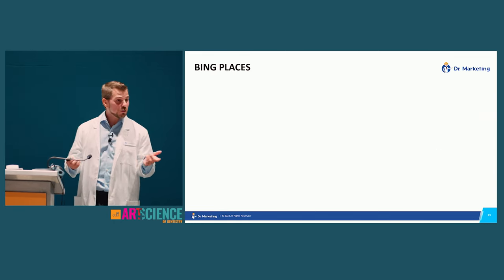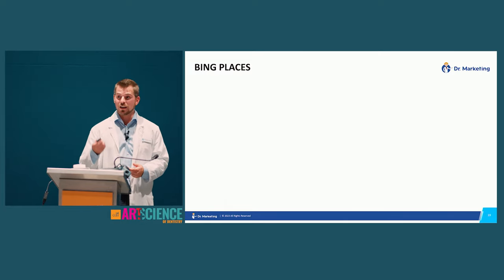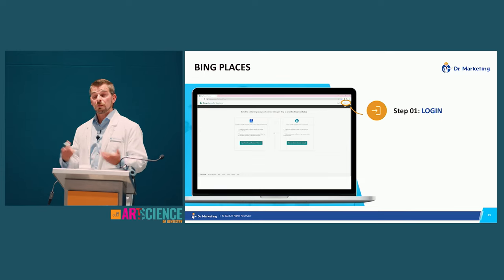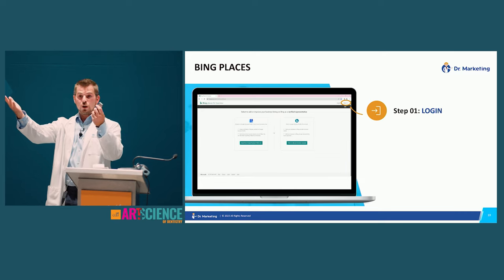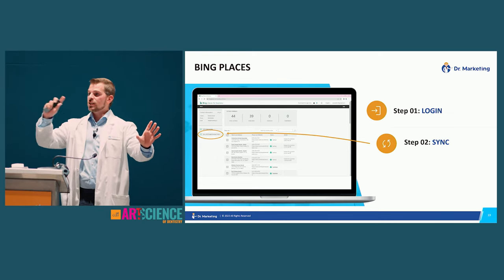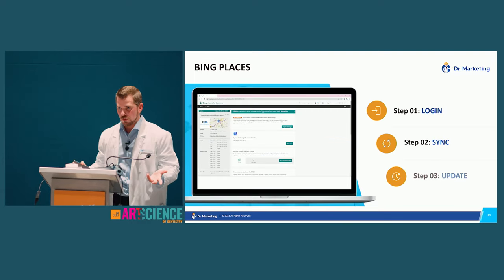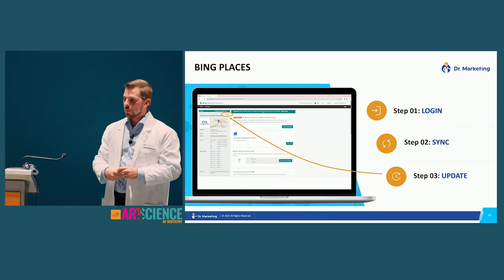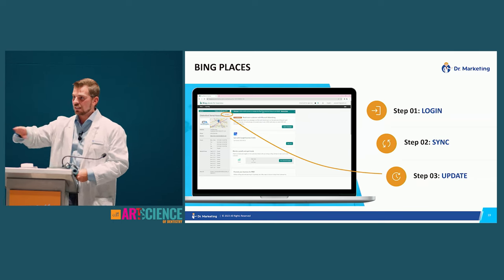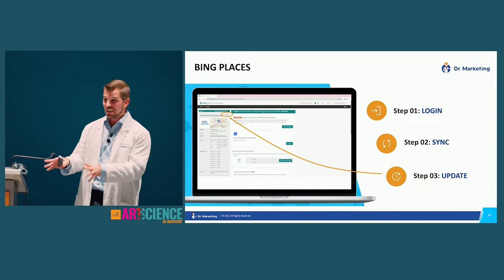After Google, set up Bing. Did you know 30% of the world still uses Bing? It's the default browser for PCs — not everyone changes their default search engine. Go to bing.com and log in — Bing and Microsoft talk to each other, so you can log in through your Google account. Then sync Google to Bing; it takes about a minute and pulls about 95% of your data. Go to your homepage, edit all information — hours, images, contact info, social media profiles — and you're done. Takes about three to four minutes.